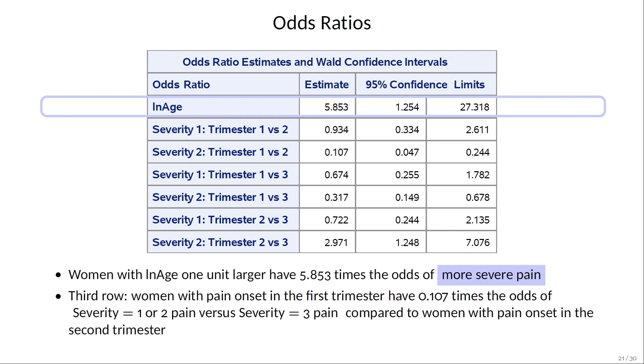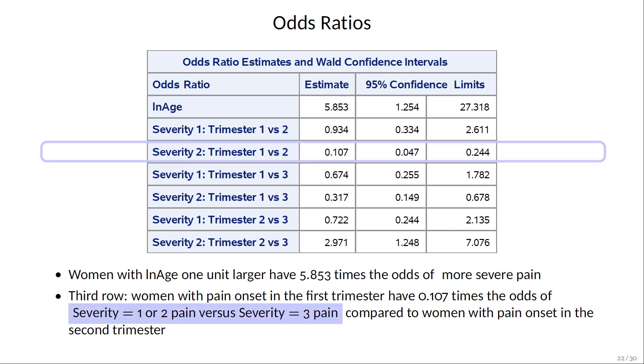To interpret the odds ratios, since log age is a proportional odds effect, you can summarize the results by saying more severe pain. But trimester is split up by function, so you have to distinguish the odds ratios according to the response function.